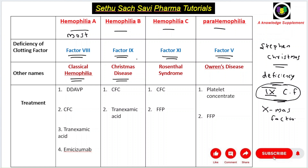Clotting factor 9 is called the Christmas factor, and Hemophilia B is called Christmas disease because it involves a deficiency of clotting factor 9 — no relationship with Christmas Day. Hemophilia C is also called Rosenthal syndrome, and Parahemophilia is also called Owren's disease.